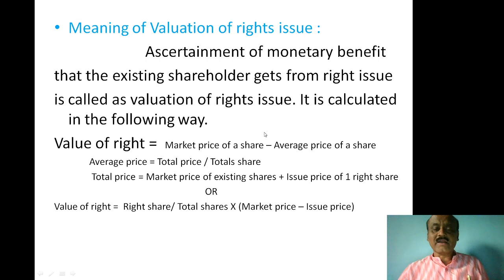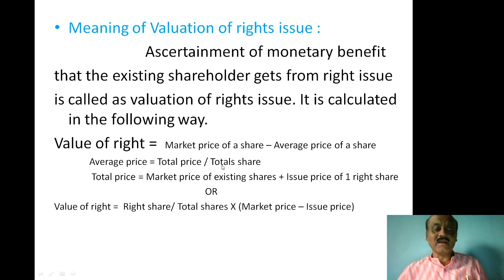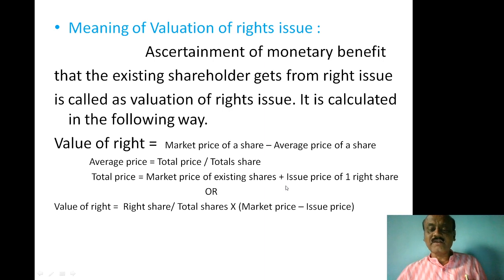Valuation of right issue is calculated as: value of right issue equals market price of a share minus the ERES price of a share. The ERES price (average price) is the total price divided by total shares. Total price is the market price of existing shares plus the issue price of one right share.